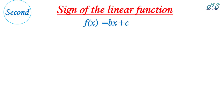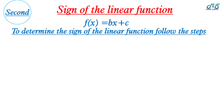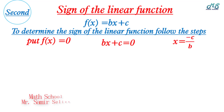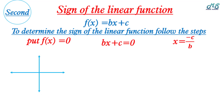Second, the sign of the linear function. The linear function is written as f(x) = bx + c. To determine its sign, follow these steps: first step, put f(x) = 0 to find the value of x. We get bx + c = 0, which gives x = -c/b. The value of -c/b is the root of the equation. We can represent the linear function with a slant line.